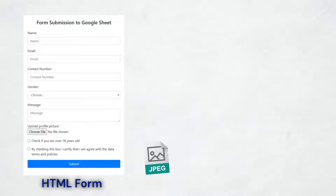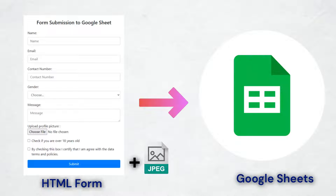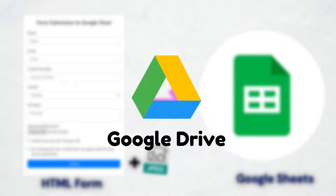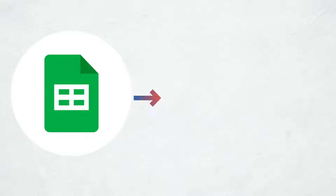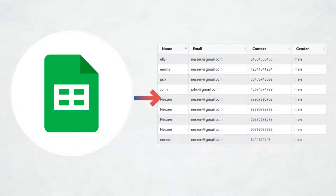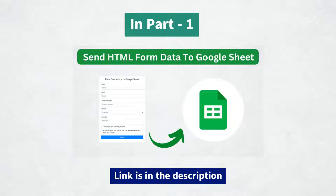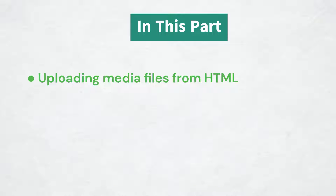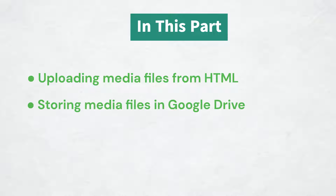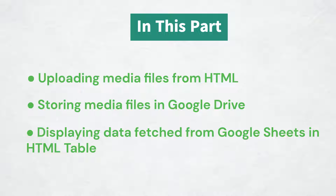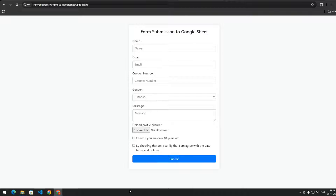In this video I will show you how to send HTML form data, including media files, directly to Google Sheets and store those media files on Google Drive. We will also display the data retrieved from Google Sheets in an HTML table, all without needing any backend server. This is part 2; in part 1 we covered how to send basic form data to Google Sheets, so if you haven't seen that you can check the link in the description.